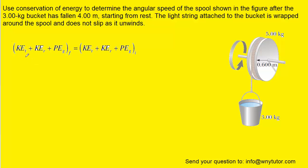On the left side of the equation we would have the translational kinetic energy, the rotational kinetic energy, and then the gravitational potential energy all in their final state, and then we set that equal to the same energies in their initial state.